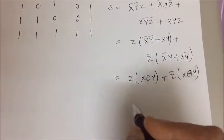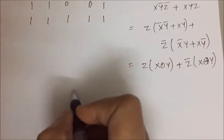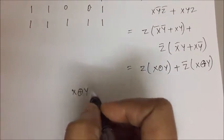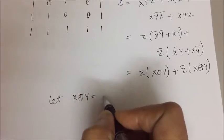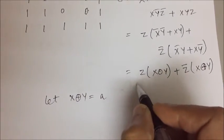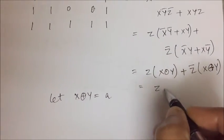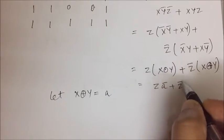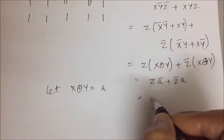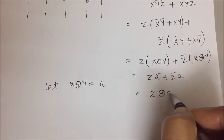Now if you consider x x-or y as let x x-or y is a. So this expression I can write as z a bar plus z bar a, which is nothing but z x-or a.